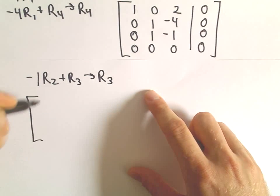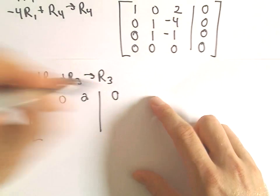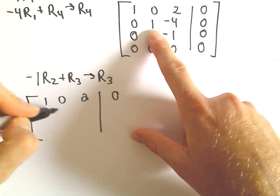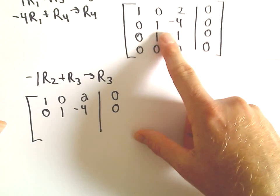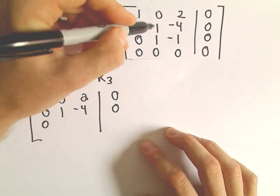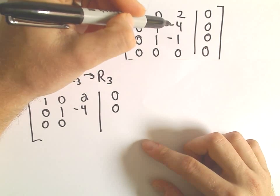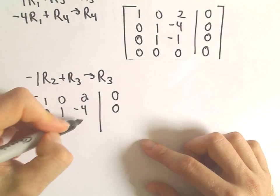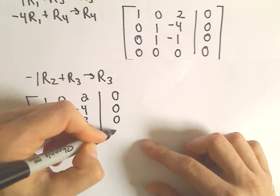I'm going to leave the first row alone: 1, 0, 2, 0. I'm going to leave the second row alone as well. If we multiply it by negative 1, we'll just get 0. Negative 1 plus 1 is 0. We'll get positive 4 minus 1, which is 3. And then we still have 0, 0, 0, 0, 0.